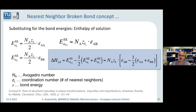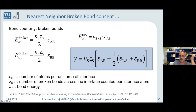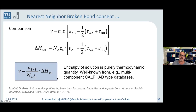It took a few decades more until David Turnbull suggested that the nasty term with the epsilons can actually be replaced by a thermodynamic quantity. He used the same bond counting strategy to evaluate the enthalpy of solution, delta H sol, and ended up with an expression that is also a structural factor — Avogadro's number, coordination number, and the same binding energy terms. When you take these two equations, you can get rid of the epsilon parts and end up with a description where the interface energy is only related to the enthalpy of solution — which we do know from CALPHAD databases, from computational thermodynamics. That was in 1955.